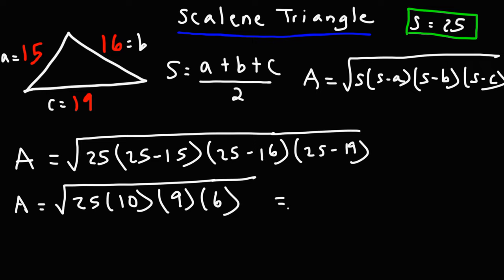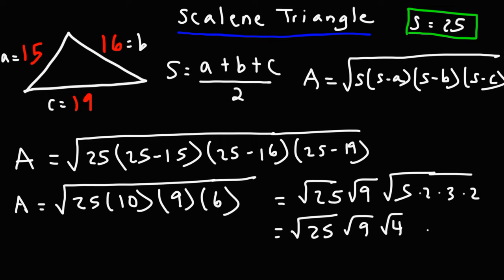So what I like to do is I like to take out the perfect squares. 25 is a perfect square. 9 is a perfect square. And we're left with 10 and 6. But 10, I'm going to break that into 5 and 2. And 6 is 3 times 2. 2 times 2 is 4. So we can take that perfect square out. And we're left with 5 times 3, which is 15.